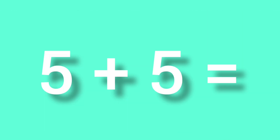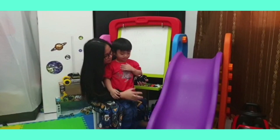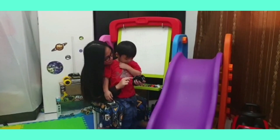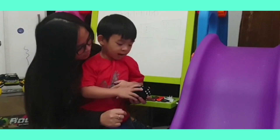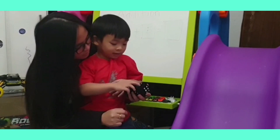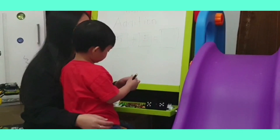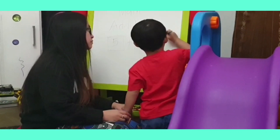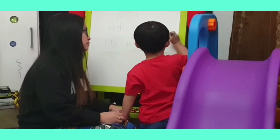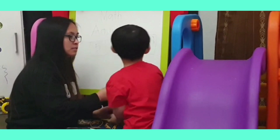What number are those? How many? What number are these? One, two, three, four, five. You write number ten. Very good. So, five plus five is equals to? Yeah. Very good, boy.